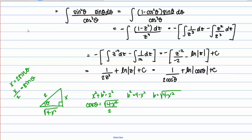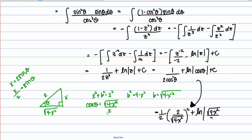Now that we have cosine of theta in terms of x, we can finish the problem. We have 1 half times 2 over the square root of 4 minus x squared, squared, plus the natural log of the absolute value of the square root of 4 minus x squared over 2, plus C. There are some small simplifications possible, but we'll leave it in this form as our final answer.